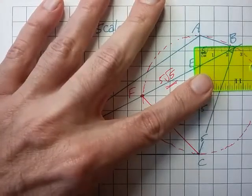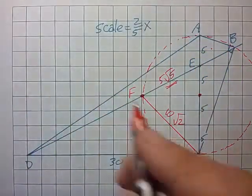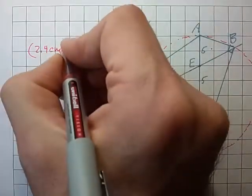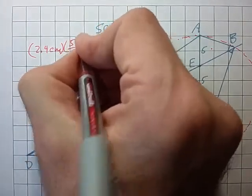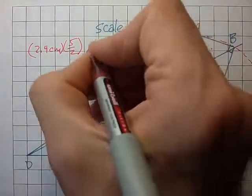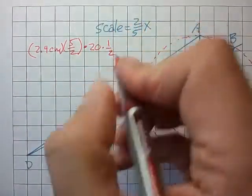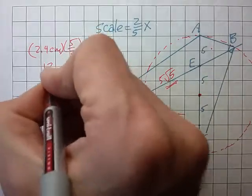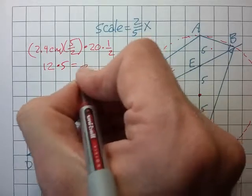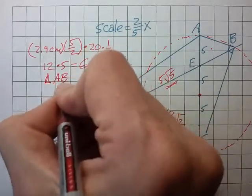So we notice that the altitude from B to the hypotenuse is 2.4 centimeters. Multiplying up by our scale factor, 5 halves gives us the altitude from B to A. Multiplied by the base of 20 times 1 half. 5 times 2.4 is 12. 20 divided by 4 is 5. So that gives us the area of 60 for triangle ABC.